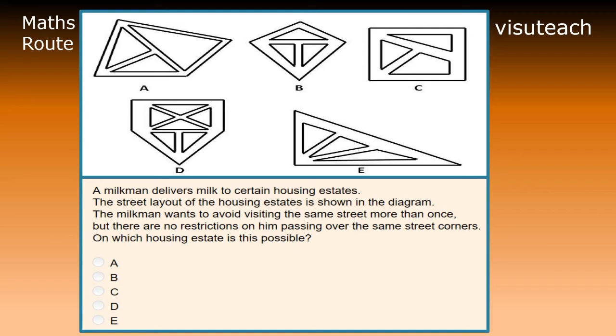The answer will be the housing estate that has less than three vertices of odd degree. So, for each housing estate, we need to look at each vertex and work out the degree of the vertex.